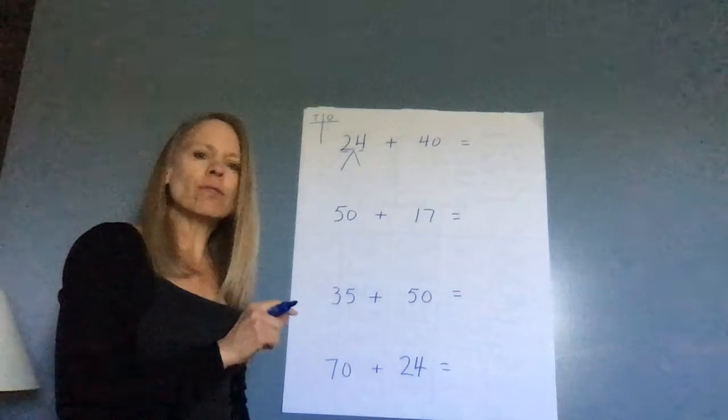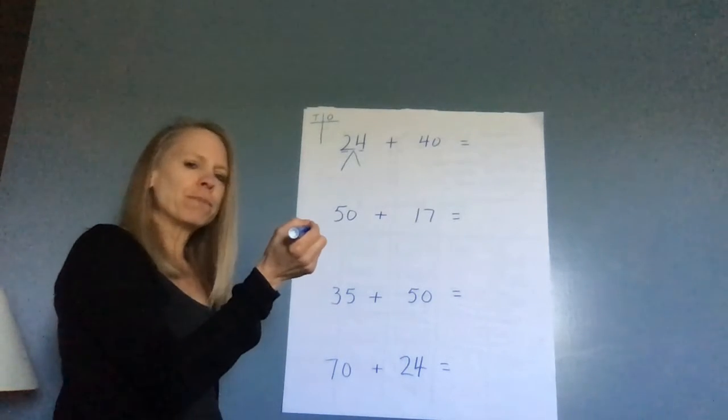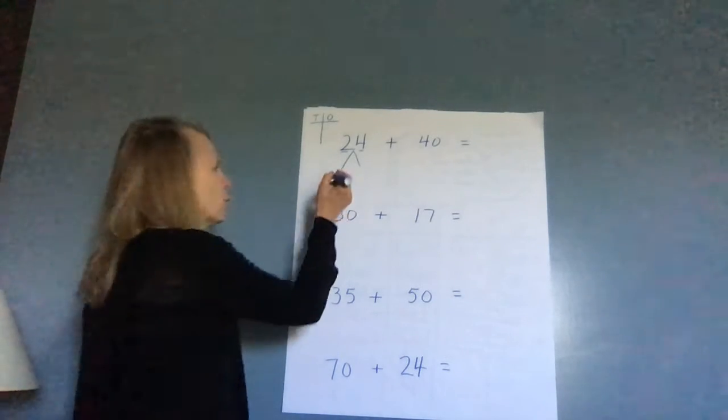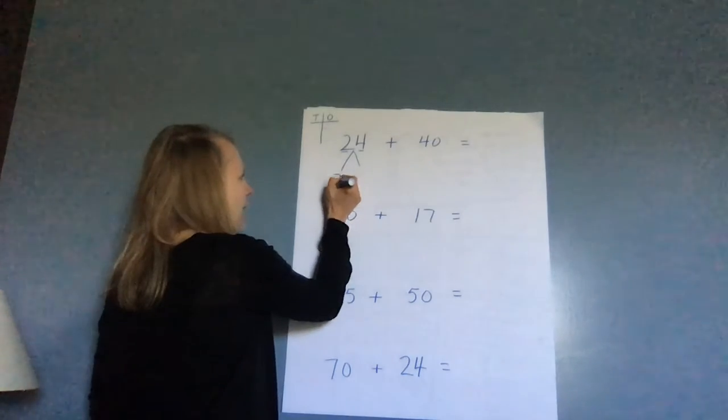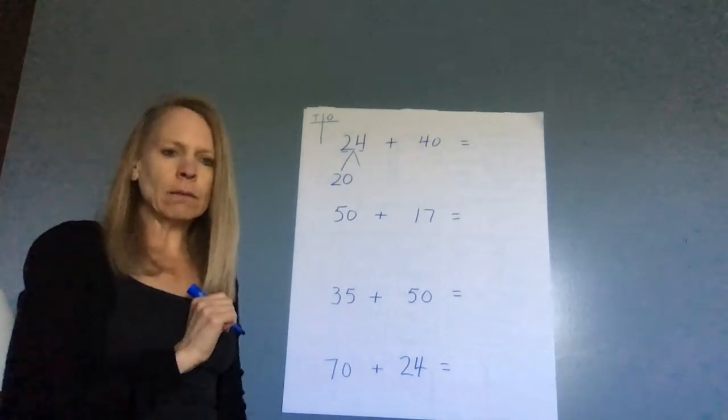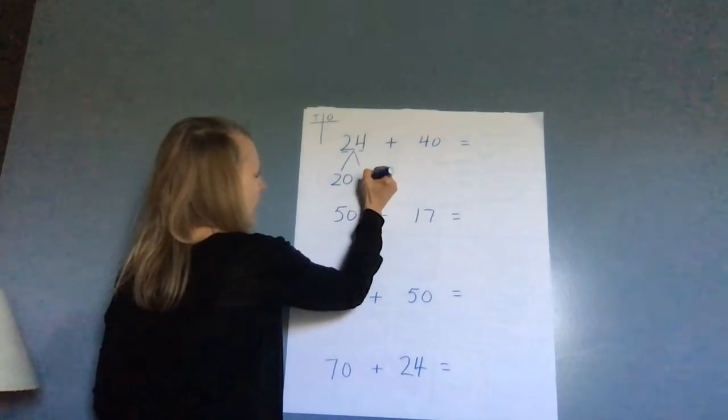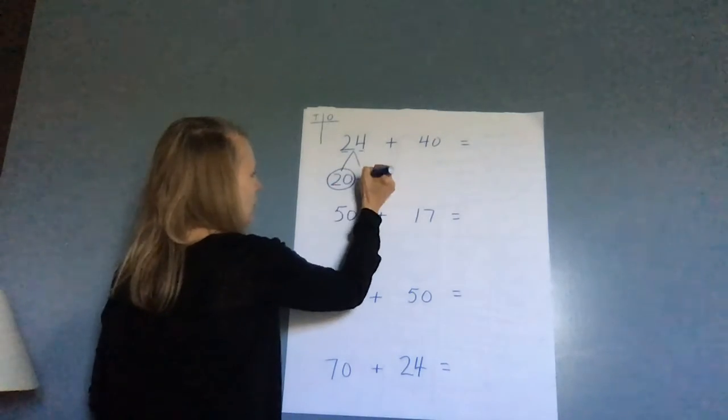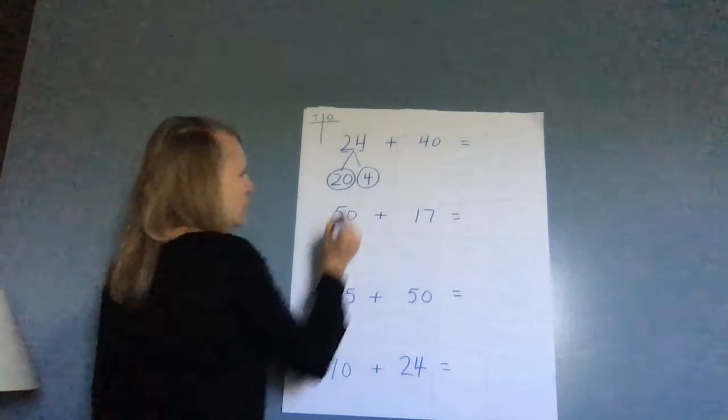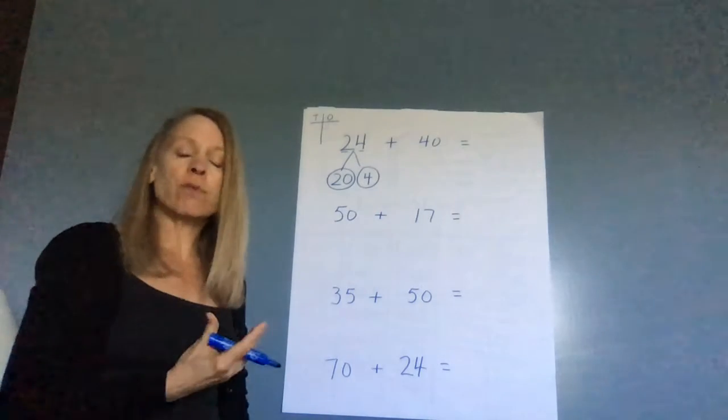If I have two tens, how much do I have? I'm hoping you're saying 20. So if I have two tens, I have 20. And if I have four ones, I have four. So I have two tens which is 20 and then four ones which is four.